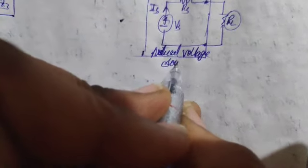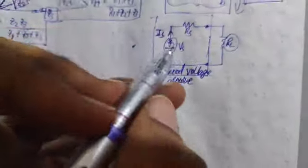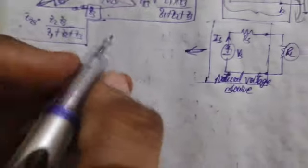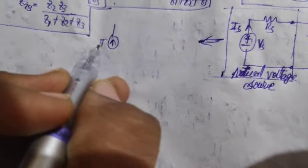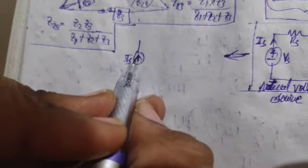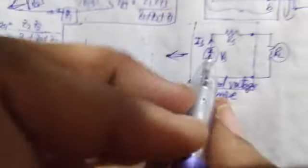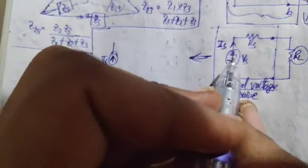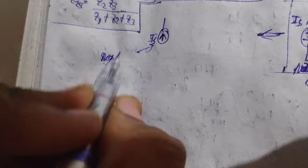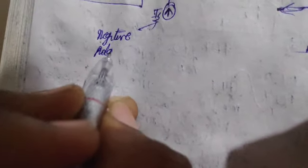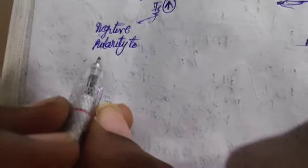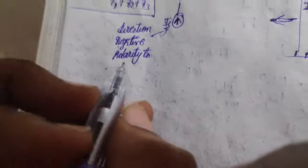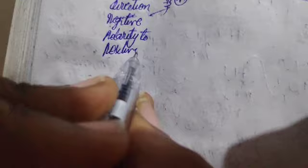Now we convert this voltage source into a practical current source. Here we have the current IS, and you can observe that this current is directed upward. That is because it is moving from the negative polarity toward the positive polarity — so its direction is from negative polarity to positive polarity.